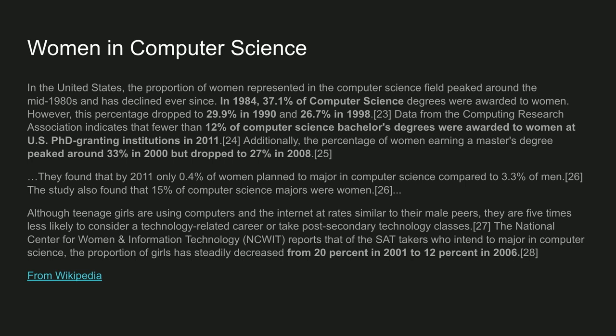And reading that, it goes back to elementary, middle, and high school. A real part of it is cultural. Although teenage girls are using computers and the internet at rates similar to their male peers, they are five times less likely to consider a technology-related career or take post-secondary technology classes. National reports show that among SAT takers who intend to major in computer science, the proportion of girls steadily decreased from 20% in 2001 to 12% in 2006.